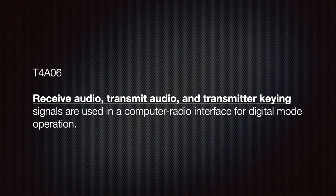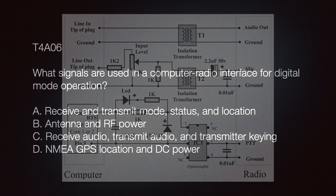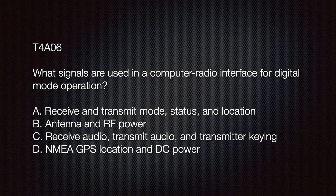Understand that receive audio, transmit audio, and transmitter keying signals are used in a computer-radio interface for digital mode operation. This slide shows a complete schematic of an interface connecting a transceiver to a computer for digital mode operations — the audio out is the receive audio, the mic is transmit audio, and PTT is the transmitter key. The test question asks: what signals are used in a computer-radio interface for digital mode operation? The correct answer is C — receive audio, transmit audio, and transmitter keying.